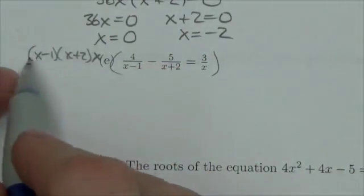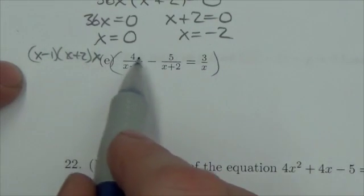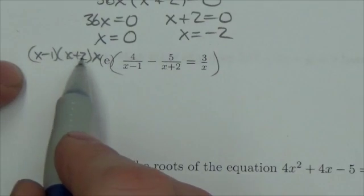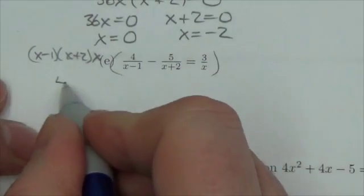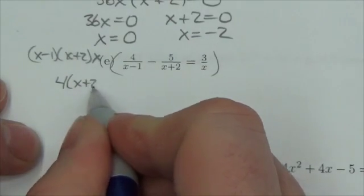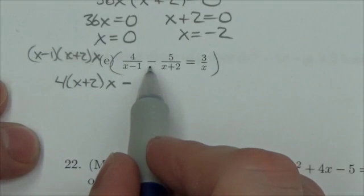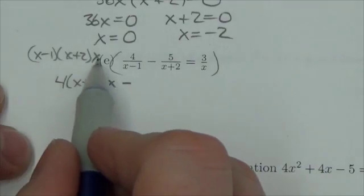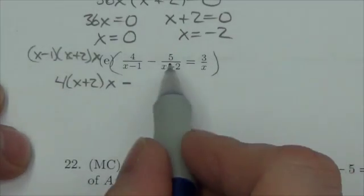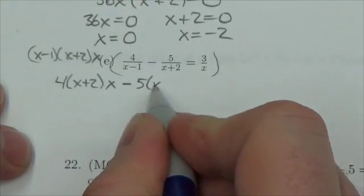If I multiply this by the first term here, all three go in the numerator: 4 times x minus 1 times x plus 2 times x. But the x minus 1 cancels and I'm left with 4 x plus 2 times x. From the minus sign in between, 5 gets multiplied by x minus 1 by x plus 2 by x, but this time the x plus 2s cancel and you're left with 5 times x minus 1 times x.